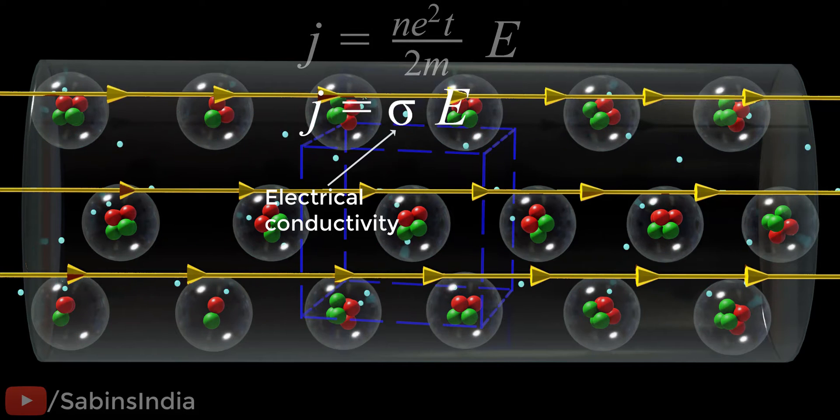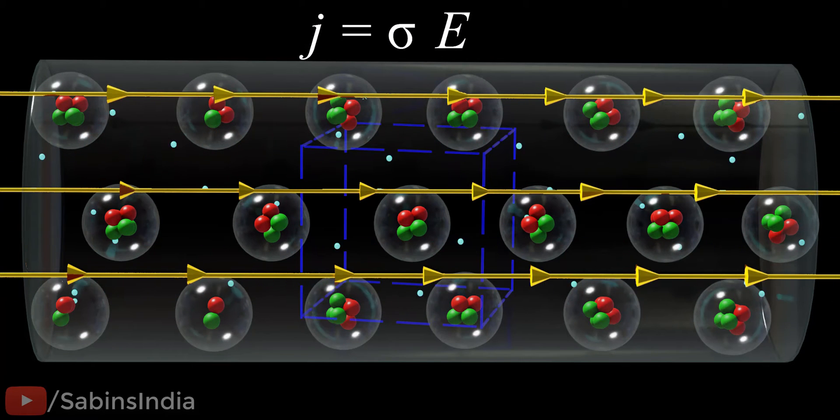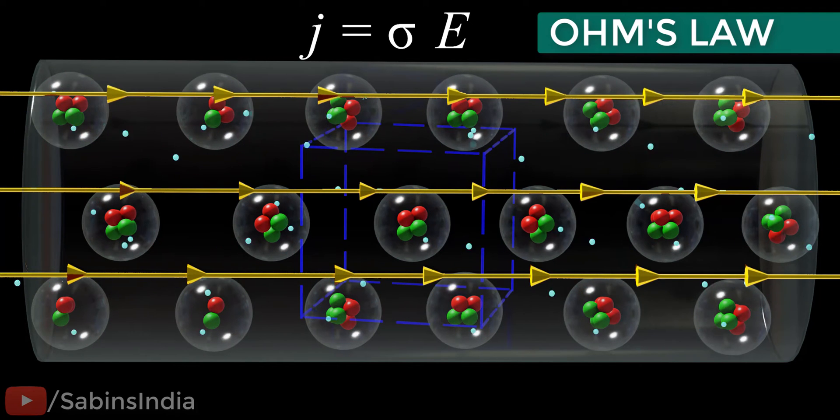This relationship says that the current density is proportional to the electric field value applied across the conductor, which is Ohm's law, exactly. However, let's present Ohm's law in more user-friendly terms.